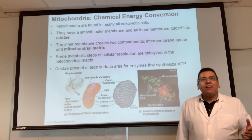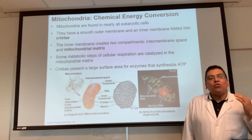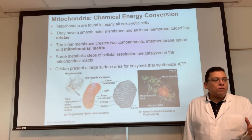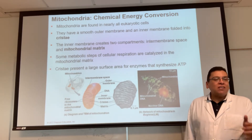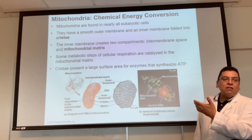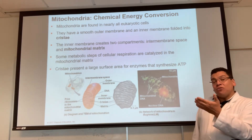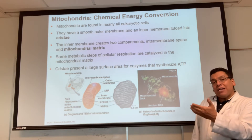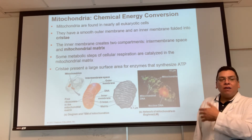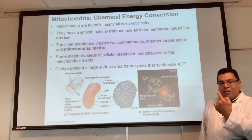That's why chapter nine is a nightmare for some students — chapter nine is cellular respiration, which is how the mitochondria makes ATP. It's involved, but we'll get there together.